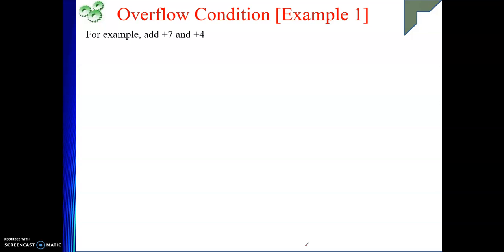Now we will see one example quickly. Overflow can occur only when adding two numbers of the same sign. Whenever they are of different signs, the overflow flag will not be set. But when doing two positive or two negative number addition, overflow may occur. So let's take plus 7 plus 4 using 4 bits.